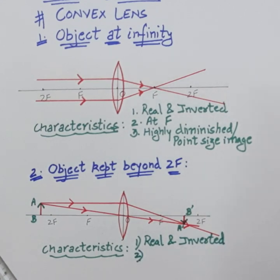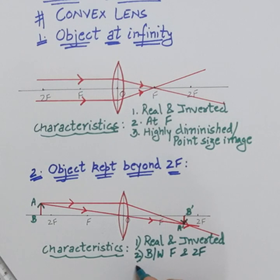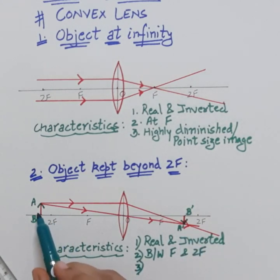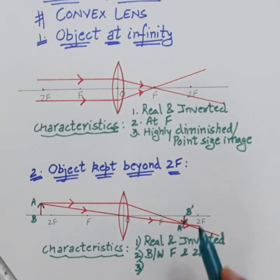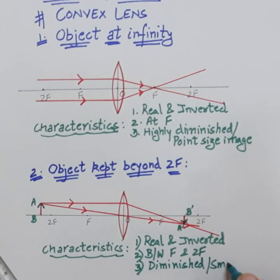The second characteristic is position: the image is formed between f and 2f. The third characteristic is size: the size of the image is smaller than the object, so we write diminished — smaller than the object. These are the three characteristics for the object kept beyond 2f.